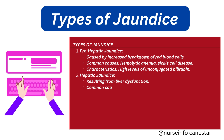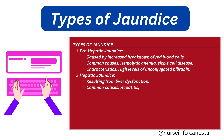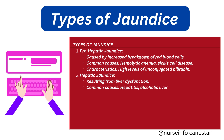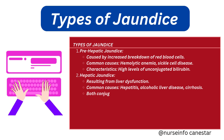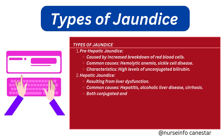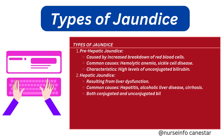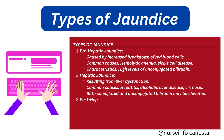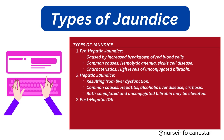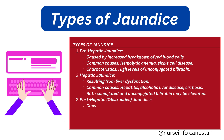Hepatic jaundice arises from diseases or damage to the liver itself. This type of jaundice disrupts the liver's ability to process and excrete bilirubin. Common causes include viral hepatitis, alcoholic liver disease, cirrhosis, and drug-induced liver injury. Both unconjugated and conjugated bilirubin levels can be elevated.